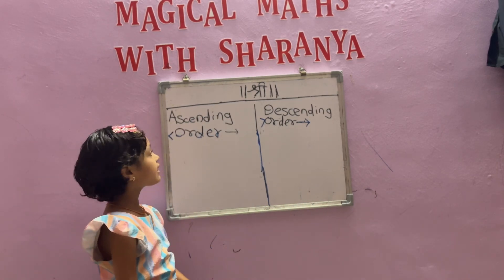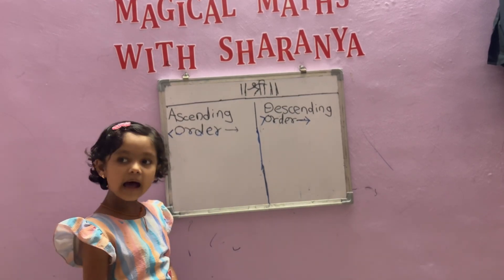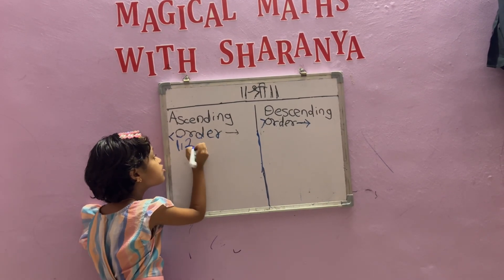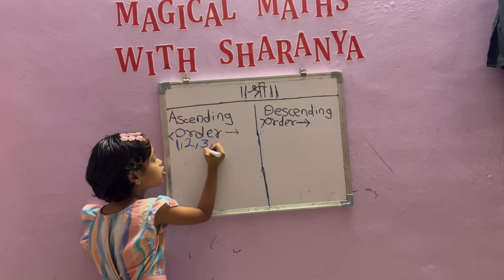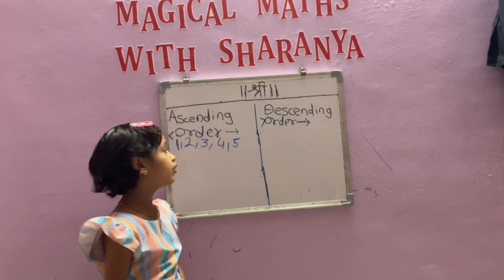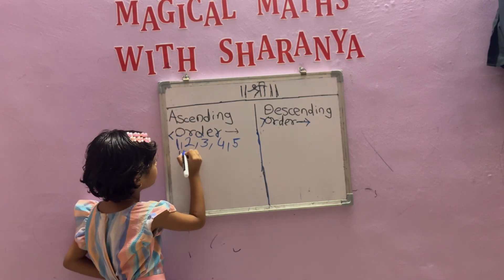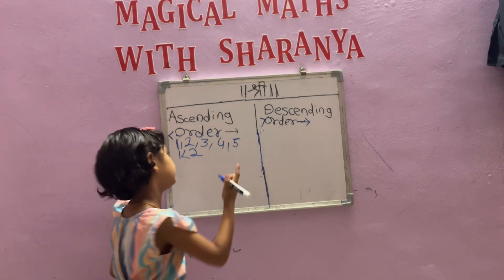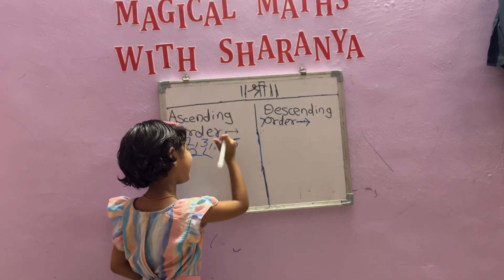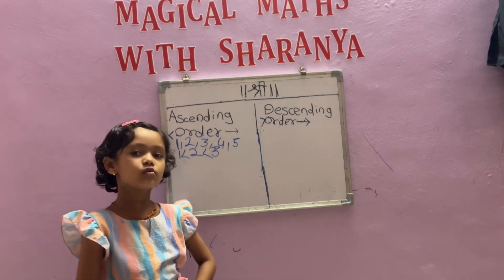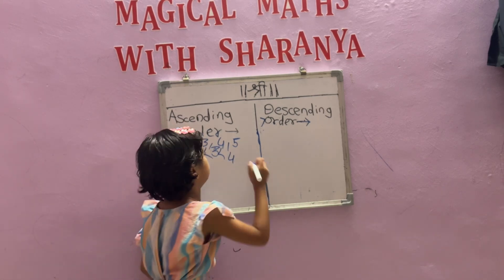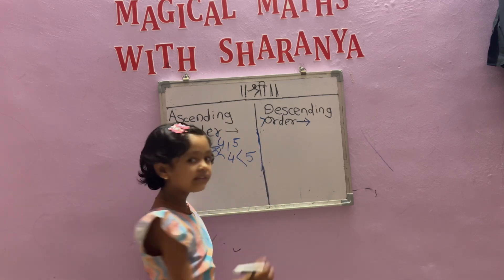Now I will write examples. One, two, three, four, five. Two is greater than one. Three is greater than two. Four is greater than three. Five is greater than four.